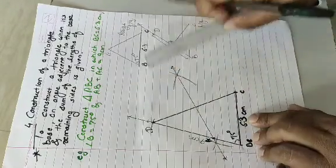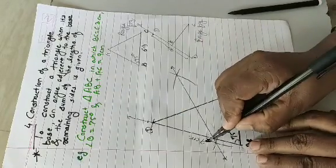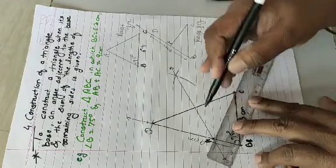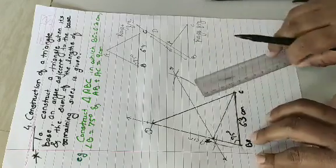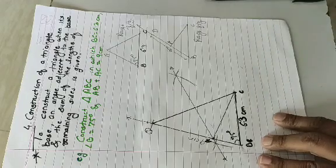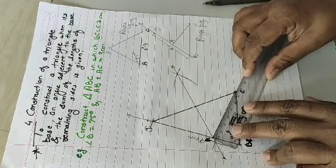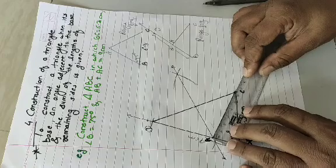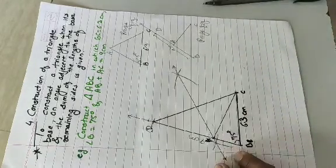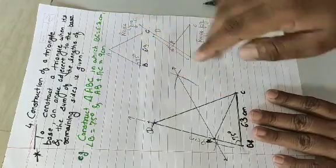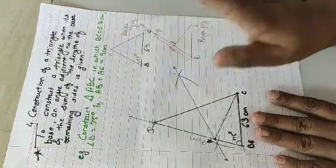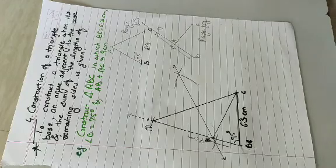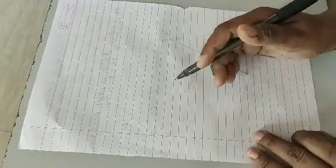Join the two arc intersection points to draw the perpendicular bisector. Where this line intersects BD, that point is our point A. Now join A and C. This gives our required triangle ABC. You can verify: measure AB and AC, and their sum equals 9 cm.